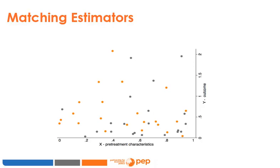To estimate the impact of a programme using a matching estimator, we need individual outcomes on the vertical axis, one or several matching variables not affected by the intervention on the horizontal axis, and we need to know who was treated and who was not. Those in orange are the treated units and those in grey are the untreated ones. To find a pair for a particular treated unit, I only use one dimension — the value of x on the horizontal axis. In this example, the unit of interest is treated with an x-value just under 0.6, say 0.58.